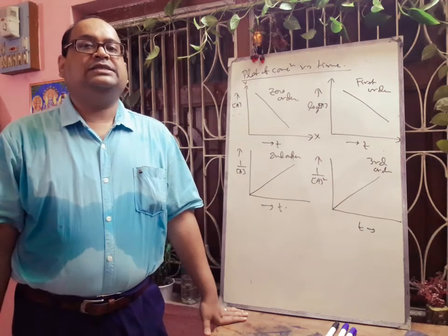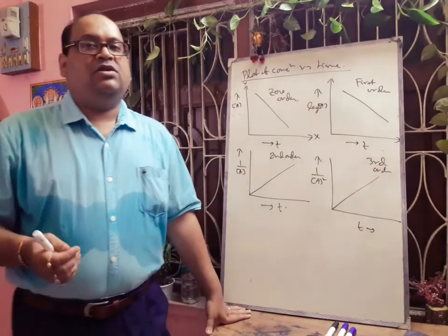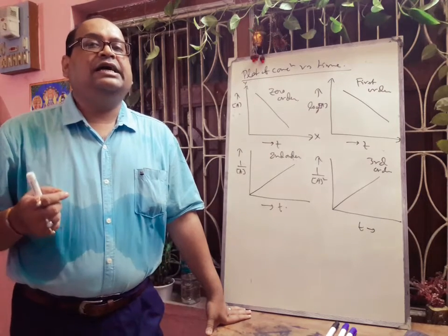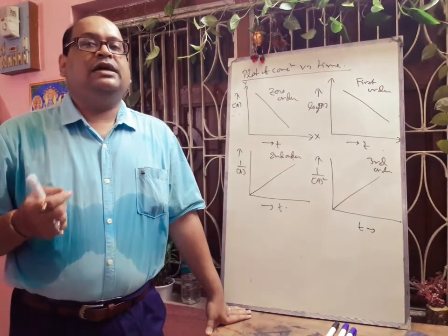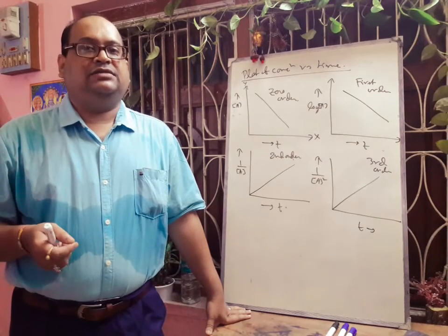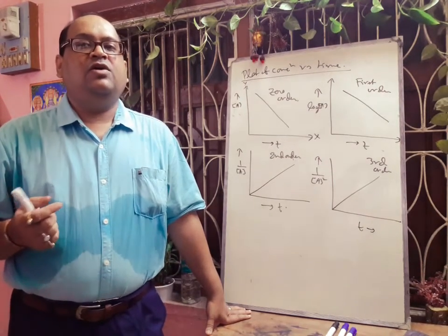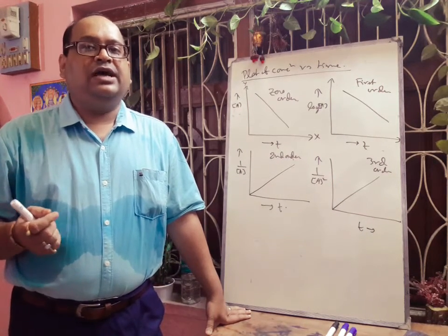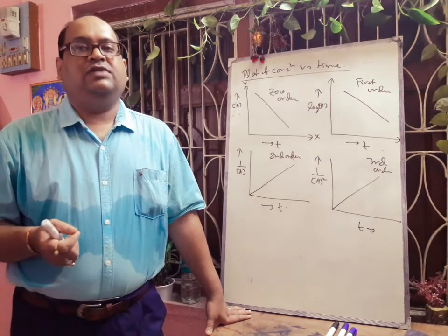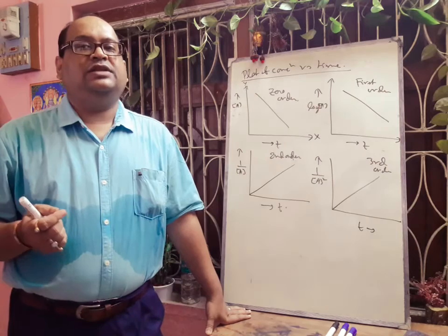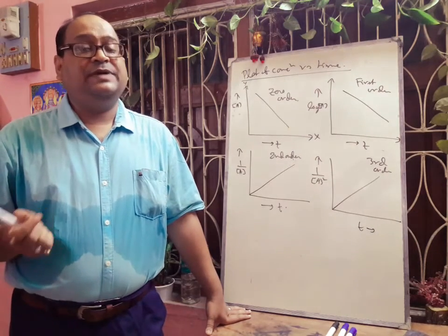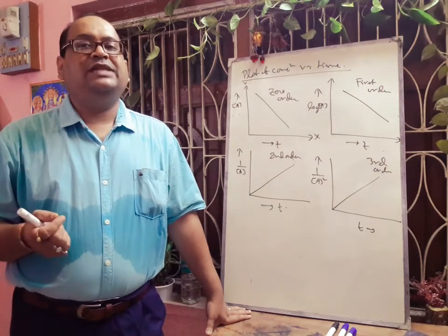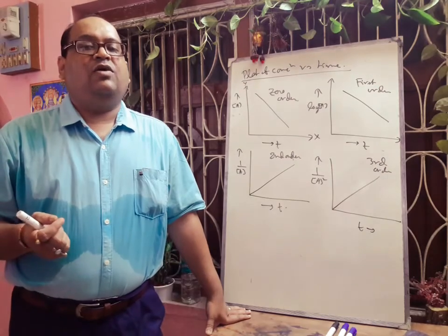Next, from the initial rate method we can also find the order of a reaction. The initial rate of the reaction is measured; then the initial concentration of only one reactant is changed while others are kept constant, and the rate is determined again. From this the order with respect to that reactant is calculated. The process is repeated for each reactant to get the overall rate law.